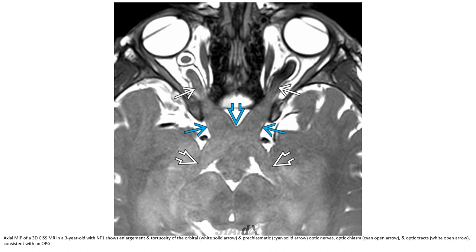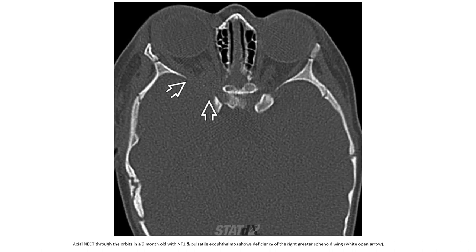Imaging demonstrates fusiform enlargement of the pre-chiasmatic optic nerve, optic chiasm, and optic tracts, consistent with an optic pathway glioma. Non-contrast enhanced imaging through the orbit in a nine-month-old with neurofibromatosis type 1 shows proptosis and absence of the right greater sphenoid wing.